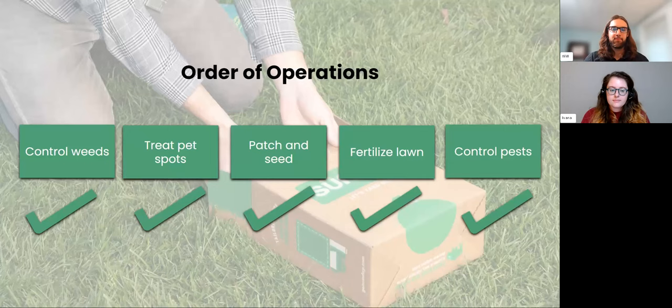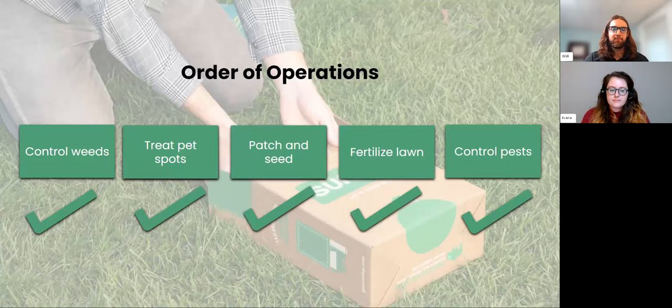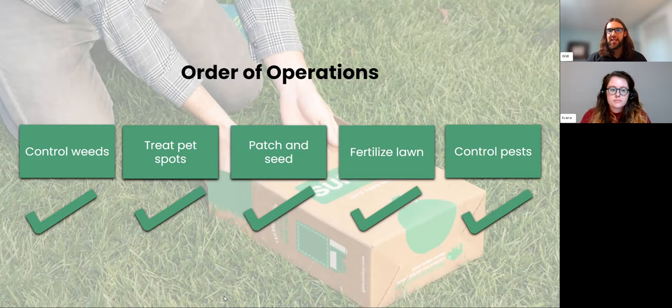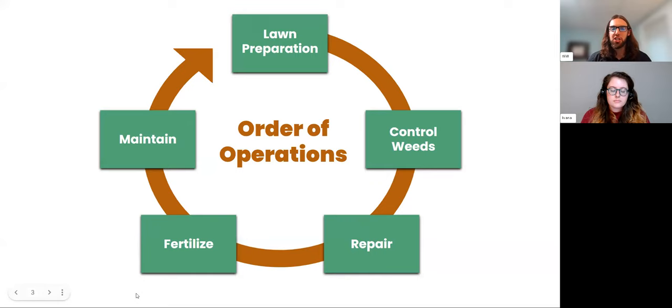This is Order of Operations for Warm Season Lawns. The focus of this webinar is to truly expand upon the instruction sheet you receive with your first box at the beginning of the season. While that's a good general guide, we want to expand upon it and note when to complete additional practices — controlling weeds, treating pet spots, patching and seeding, fertilizing, and controlling pests — and transition to more of a cyclical view.